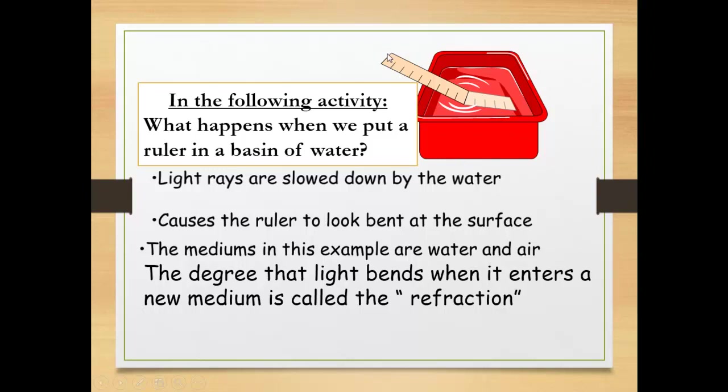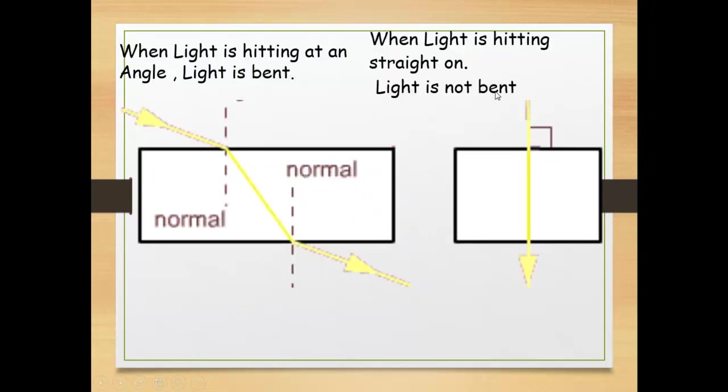Why? Because the light transfers between two different media. When light is hitting at an angle, light is bent. When light is hitting straight on, it is not bent. So when the light falls with an angle, it will refract or bend. When the light falls perpendicular, it is not bent.